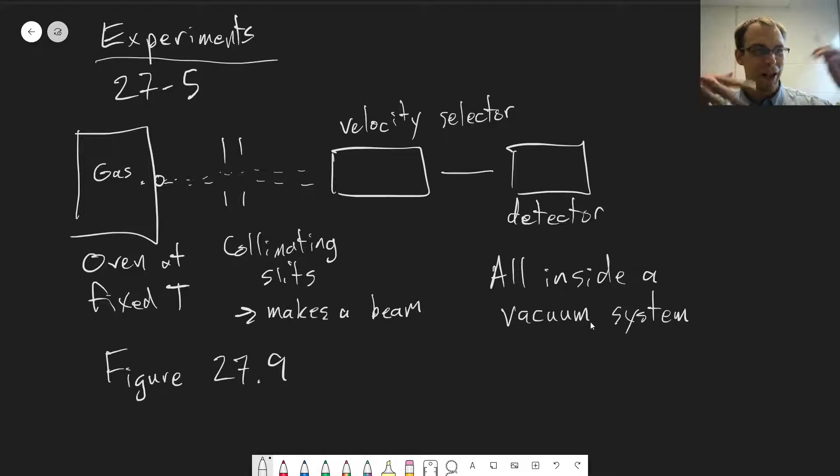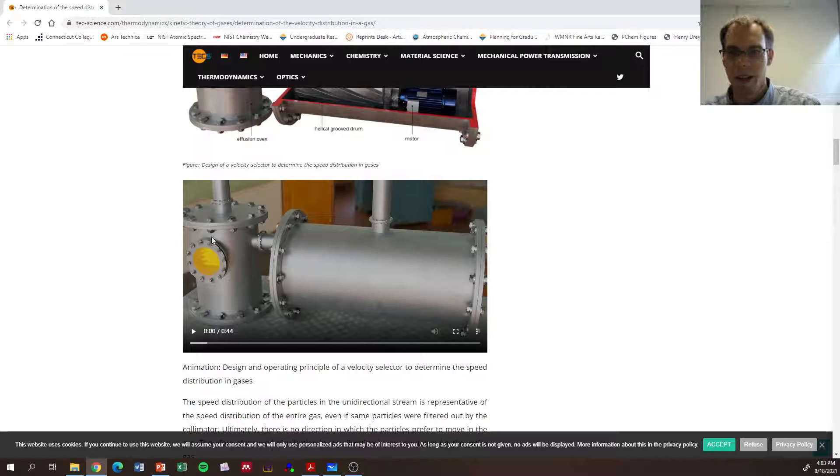Now, rather than me waving my hands around, a better way to look at this is to look at a video. So this is a website that's linked on Moodle as well, so you can come back and look at this on your own. But this is one example of velocity selector. This is slightly different than what's in your textbook, because here we have a grooved drum. So rather than a bunch of separate disks, it's all one piece. But it's the same idea.